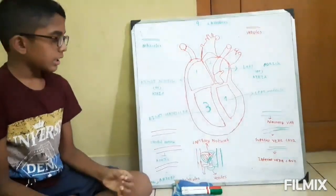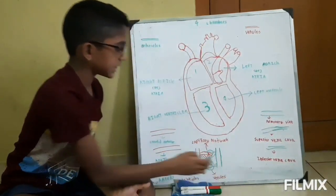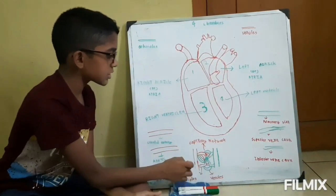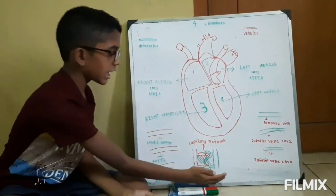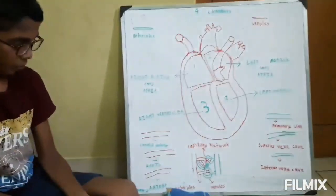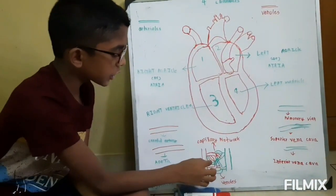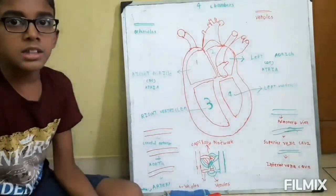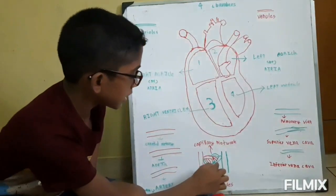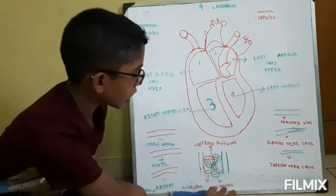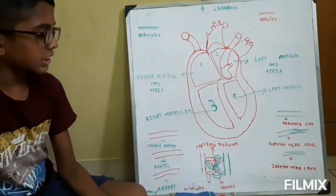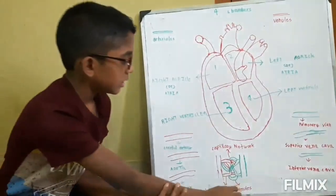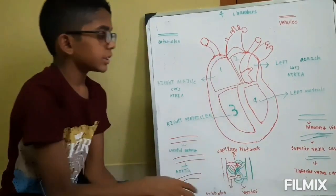Now let's see what connects these arteries and veins. The Capillary Network connects arteries and veins. Here I have drawn a sample. The red tubes are called Arterioles — they are the smallest arteries. The green tubes are called Venules — they are the smallest veins. This is how they connect.